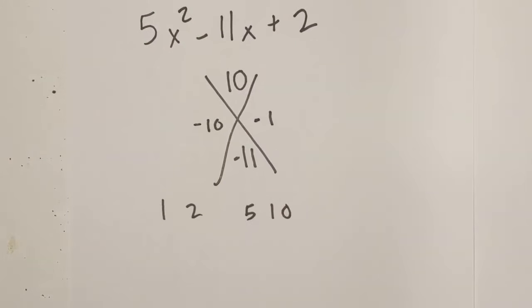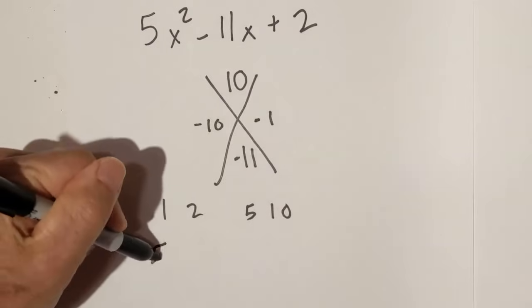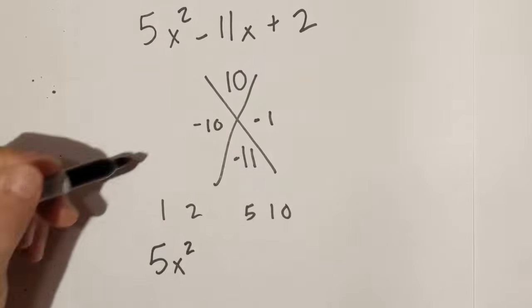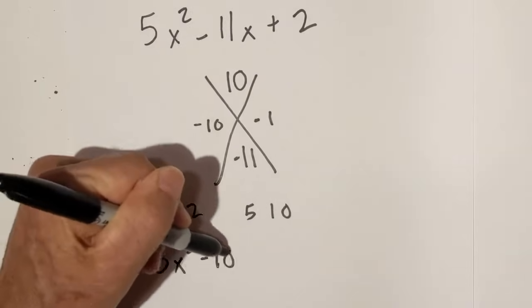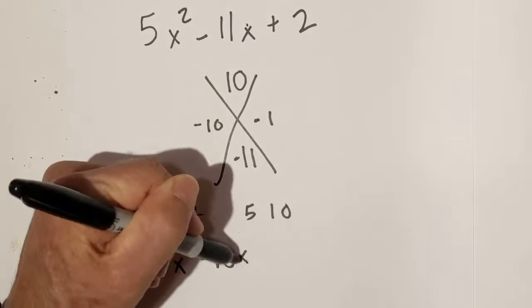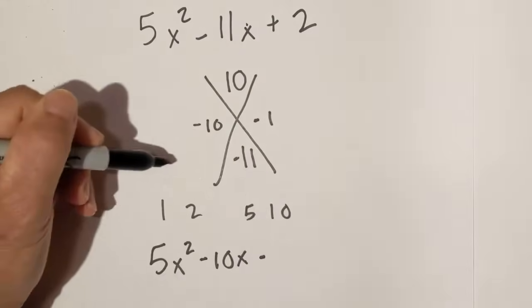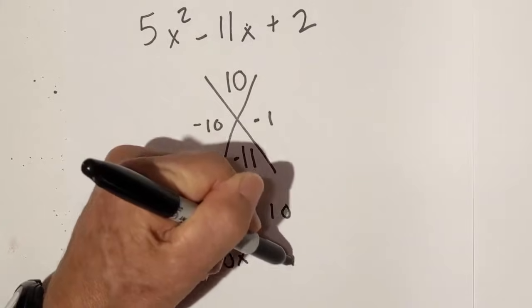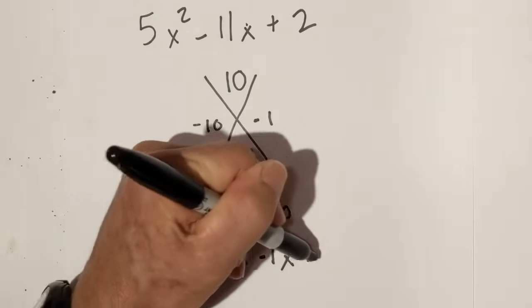So now we rewrite, so it will be 5x² minus 10x minus 1x plus 2.